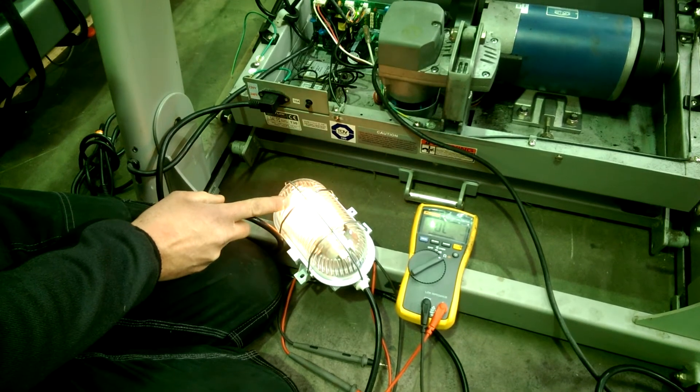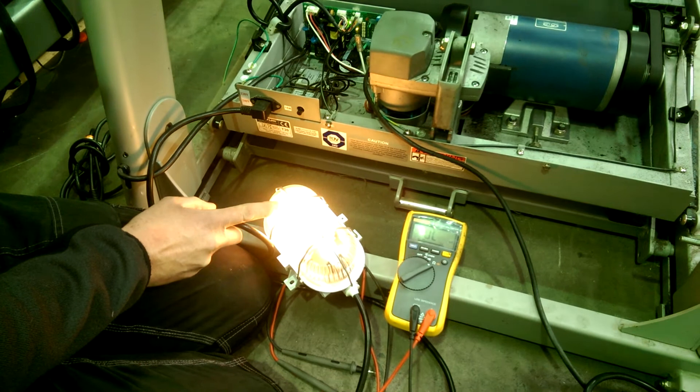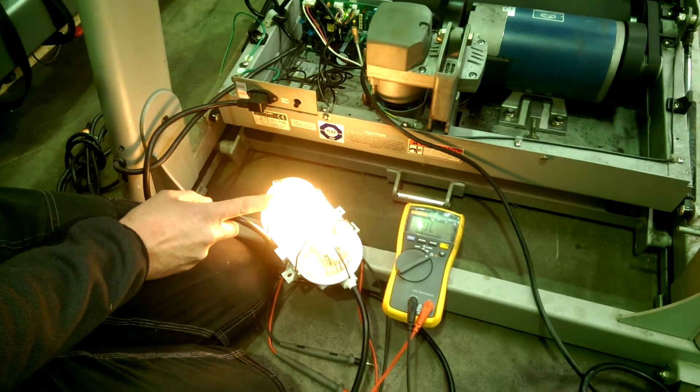And if you put the speed up, you'll see it gets brighter. And then if you put the speed down on the console, the bulb then gets dimmer.